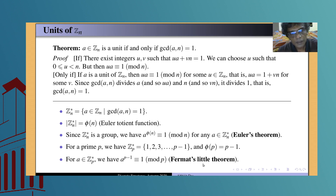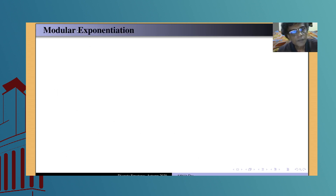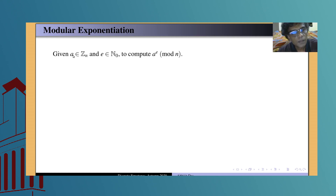Before moving to cryptography, we note that a primitive called modular exponentiation is frequently used in cryptographic primitives. The problem is: given some a in Z_n and a non-negative integer exponent e, compute a^e modulo n. This process is called modular exponentiation.